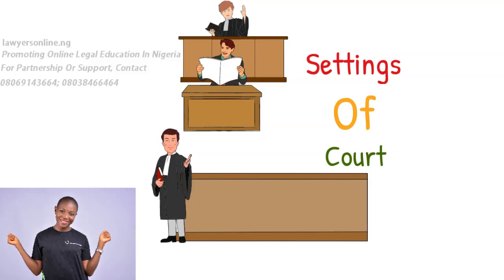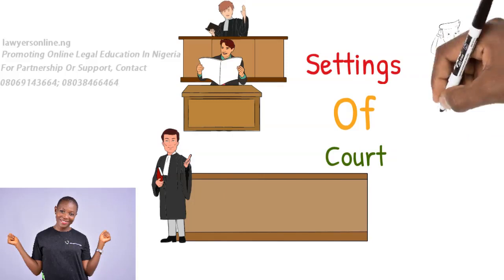It is worthy to note that there are two bars, namely the inner bar and the outer bar. The inner bar is meant for Senior Advocates of Nigeria, Attorney Generals, Life Benchers, and the Body of Benchers. In the courtroom, the inner bar consists of the first row, which is usually left empty for those meant to sit in it. The first row serves as the inner bar for courtrooms that do not have an in-built inner bar. However, some states' high courts, like the new Lagos High Courtrooms, now have the inner bar different from the outer bar. The outer bar is meant for other lawyers.